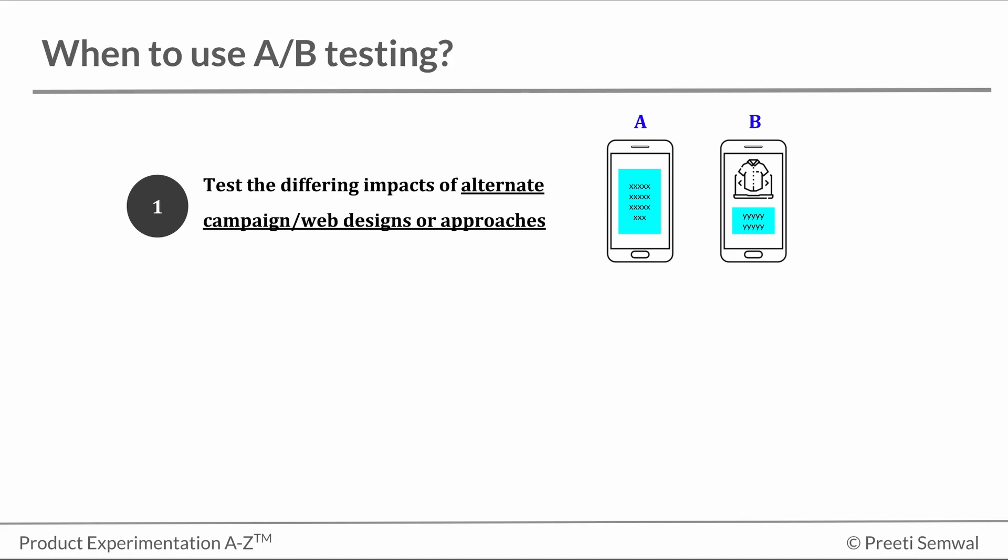After enough visitors have been funneled to both pages, the number of clicks on each version of the call to action can be compared. It's important to note that even though many design elements are changed in this type of A-B testing, only the impact of the design as a whole on the conversion goal is tracked, not individual elements.